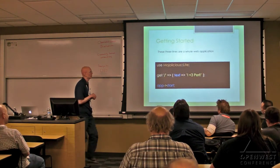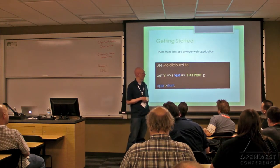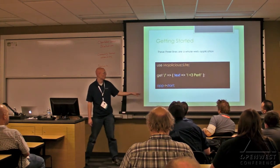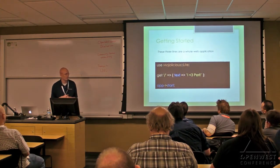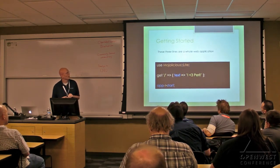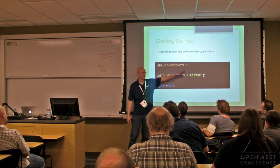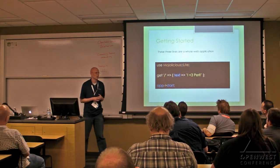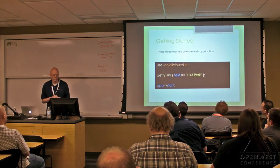A basic application is just these three lines: use Mojolicious::Lite, a get route, and instead of the standard hello world, we'll print 'I heart Perl.' Then we start the application. That's a fully functioning script in three lines of Mojolicious. Note that this is the Mojolicious::Lite module — 'lite' does not mean light on functionality. It's light in the sense that you don't have to build all the packages; you can do small snippets like this to achieve what you're trying to do.